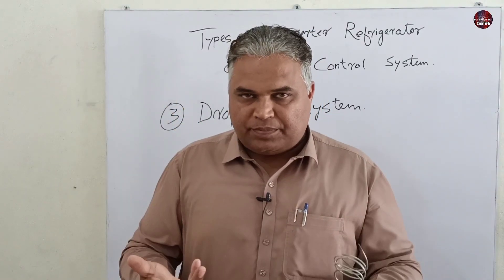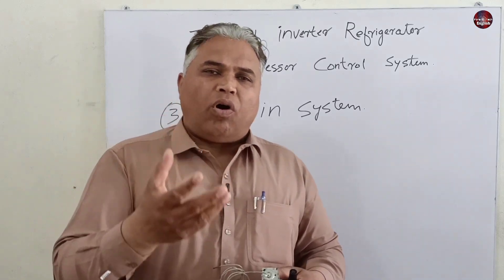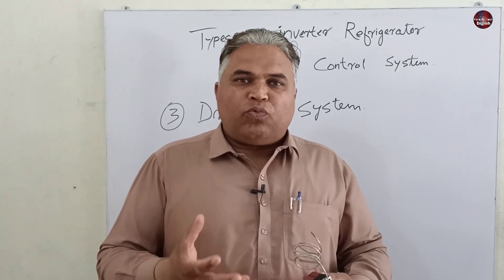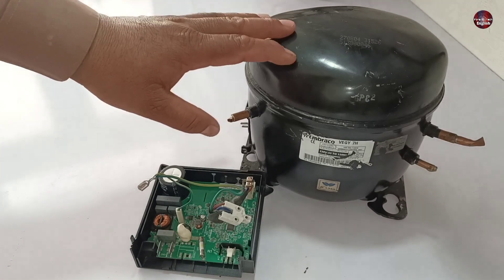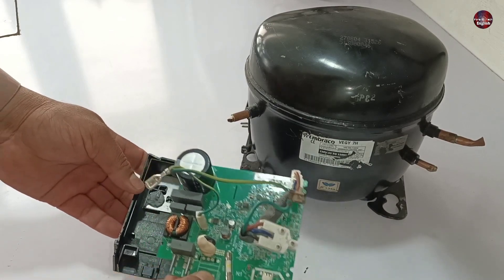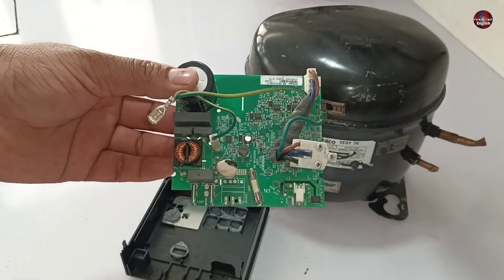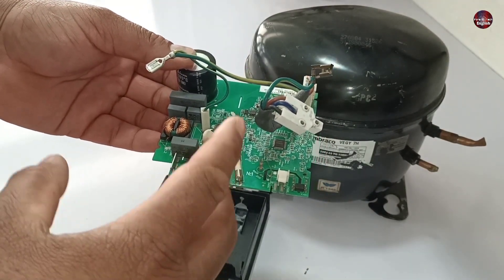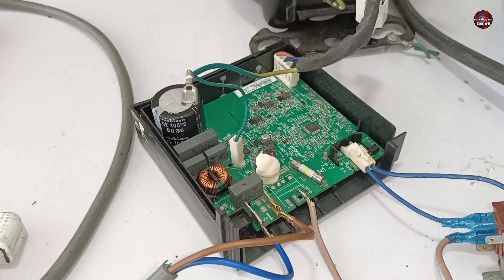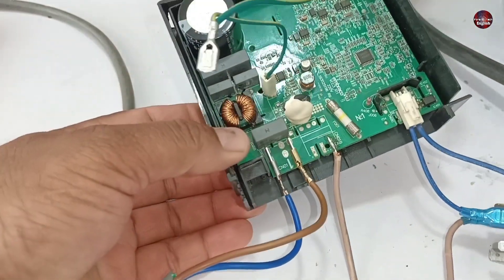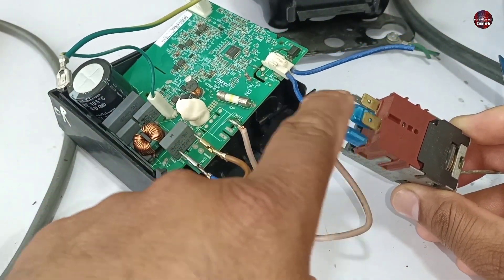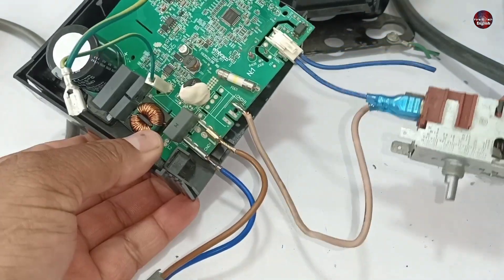Now the question is: if it is directly switching on and off, as the normal refrigerator compressor also turns on and off through a thermostat, why are we saying this system is an inverter? I have the inverter compressor and the drop-in control board which is used to control the compressor. I will explain how it works as an inverter and how it controls the speed of the compressor. Before that, I will install a thermostat with it, pass electricity through it, and explain the connections.